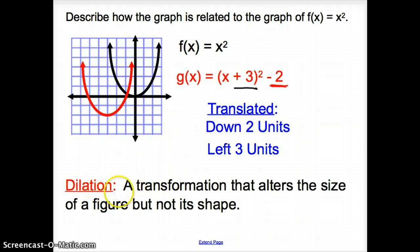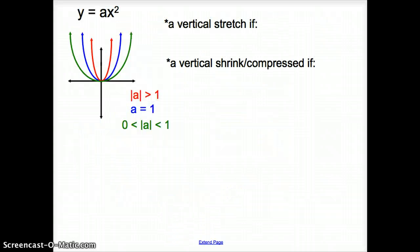And now let's try another transformation, another vocab word. Our vocab word is dilation. A dilation is a transformation that alters the size of the figure, but not its shape. So here, we are given y equals ax squared. Notice how that a is in front of the x squared.